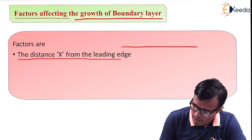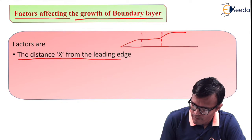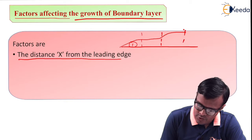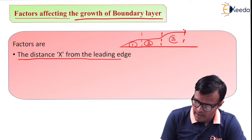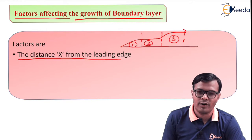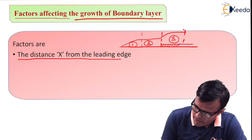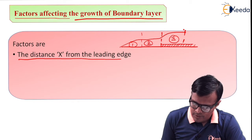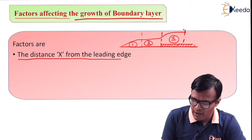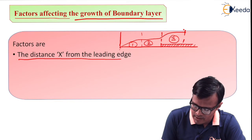Here I am drawing a boundary layer. These are the three zones: first zone which is laminar, second zone transitional, and third zone turbulent. In the third zone there exists a laminar sub-layer. The growth of boundary layer mainly depends on first factor, that is x. This x is nothing but the distance measured from this point a.